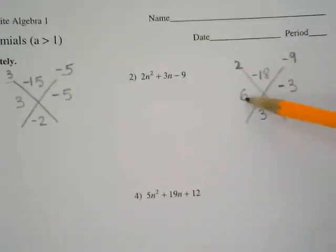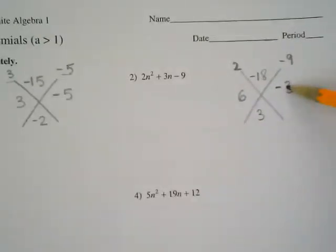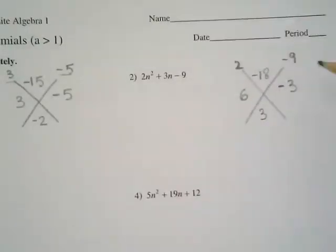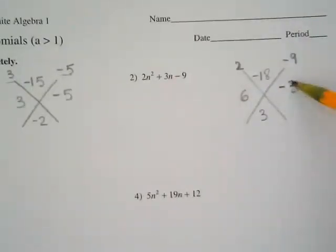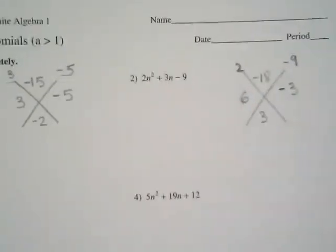So I could have put 6 here because 6 and negative 9 share a common factor of 3. But do negative 3 and 2 share a common factor? No, they don't. So this is why the 6 has to go here and the negative 3 has to go underneath the negative 9.